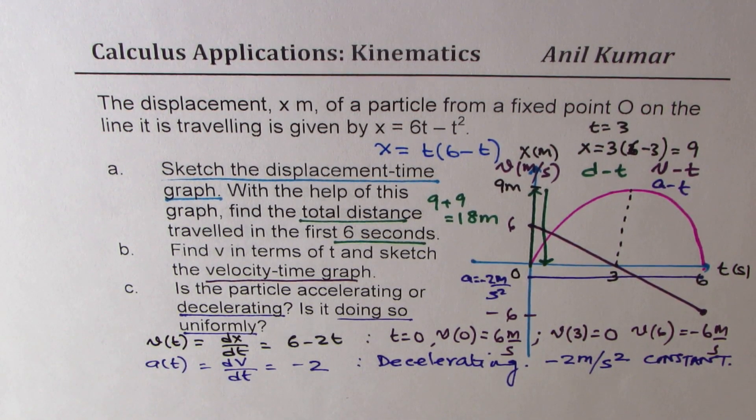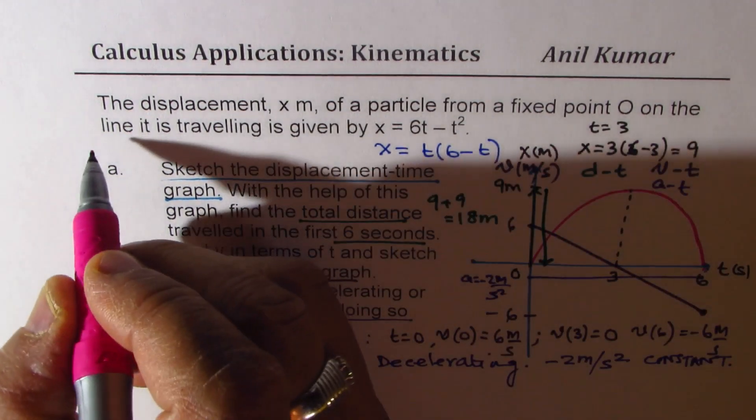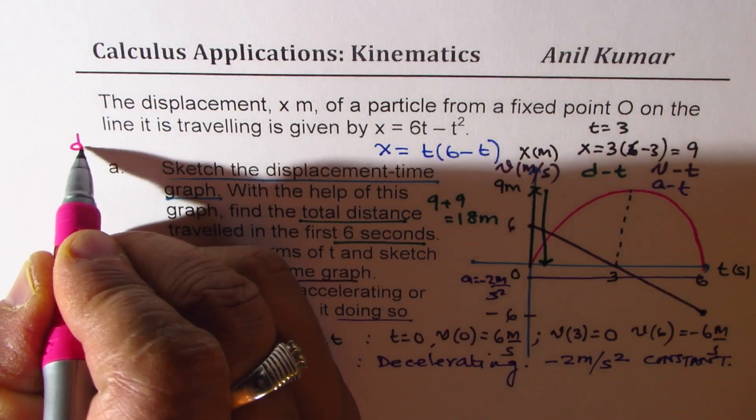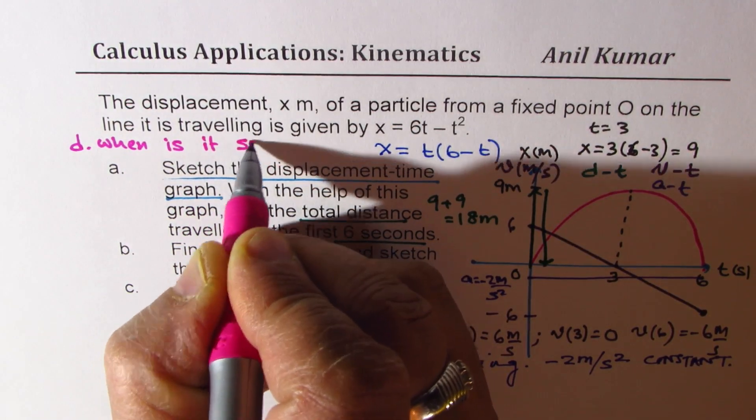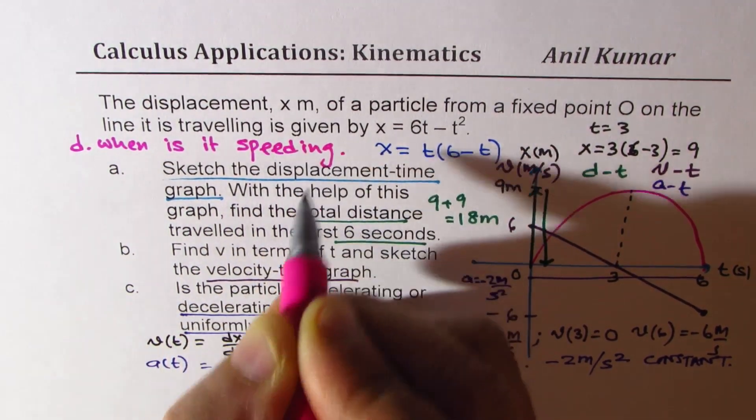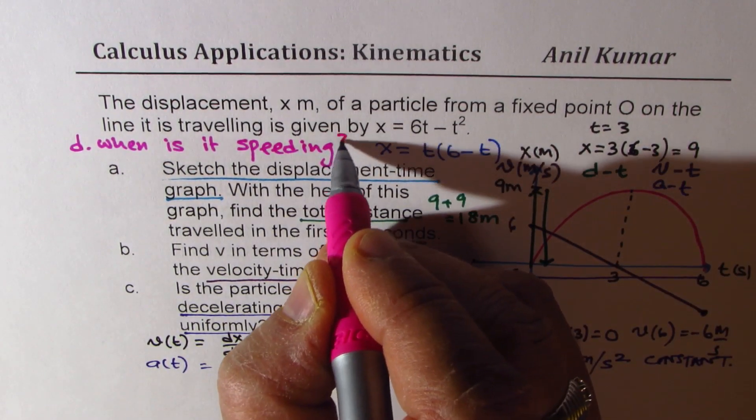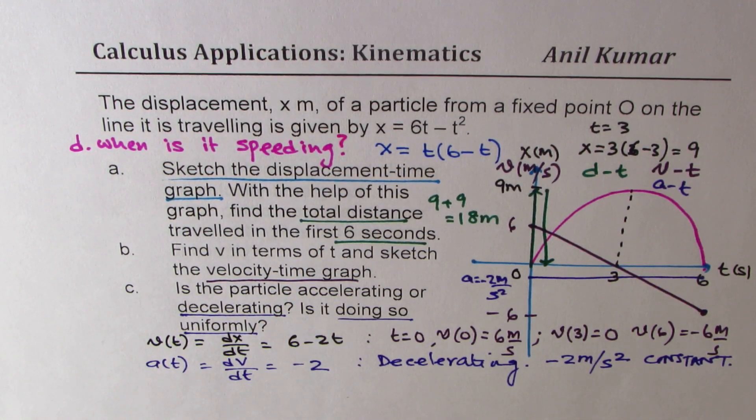Now here is a question for you. That is to say, when is the particle speeding? So the question for you is part d, when is it speeding? You can write in comments the answer of this particular question. In this interval from 0 to 6, when is the particle speeding? I hope you find it interesting and useful. In the next example, we will take up the case for speeding also. Feel free to write your comments and share your views. If you really like and subscribe to my videos, that would be great. Thanks for watching and all the best.